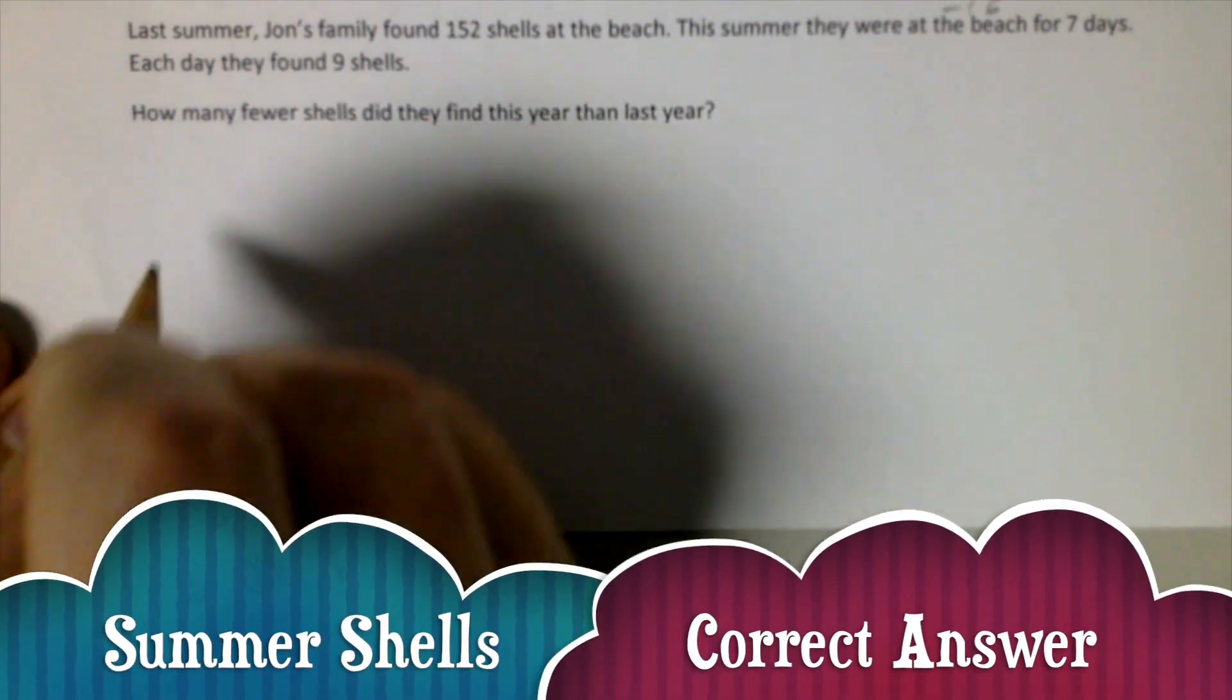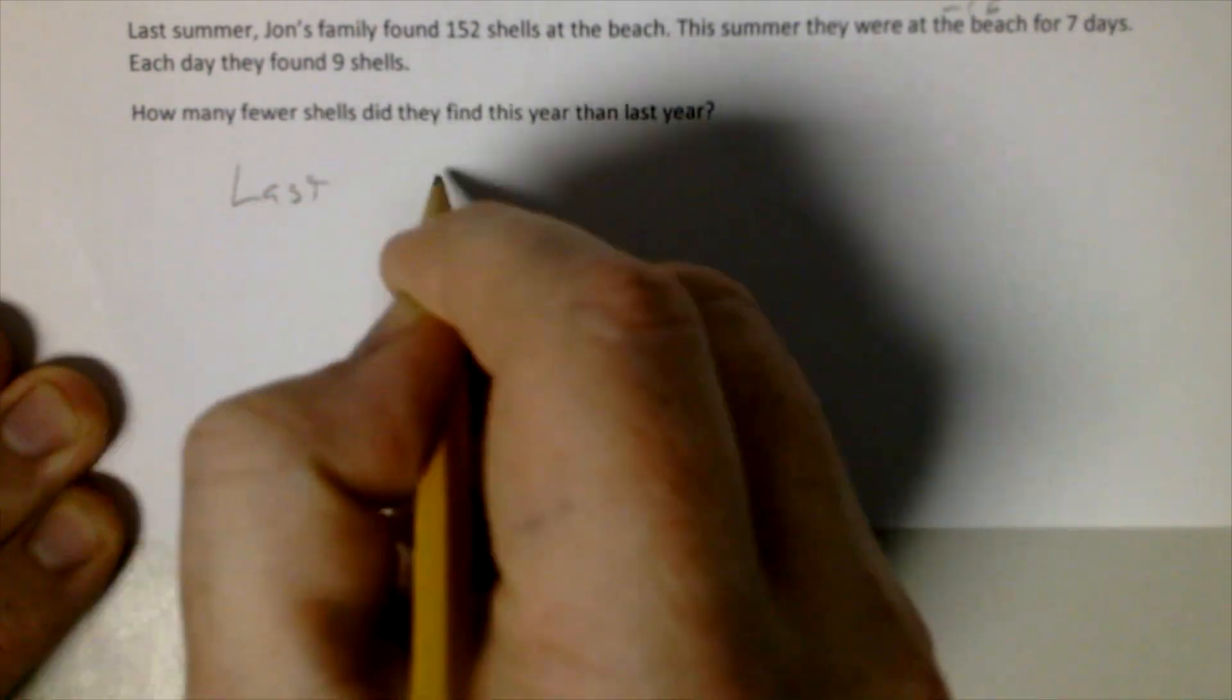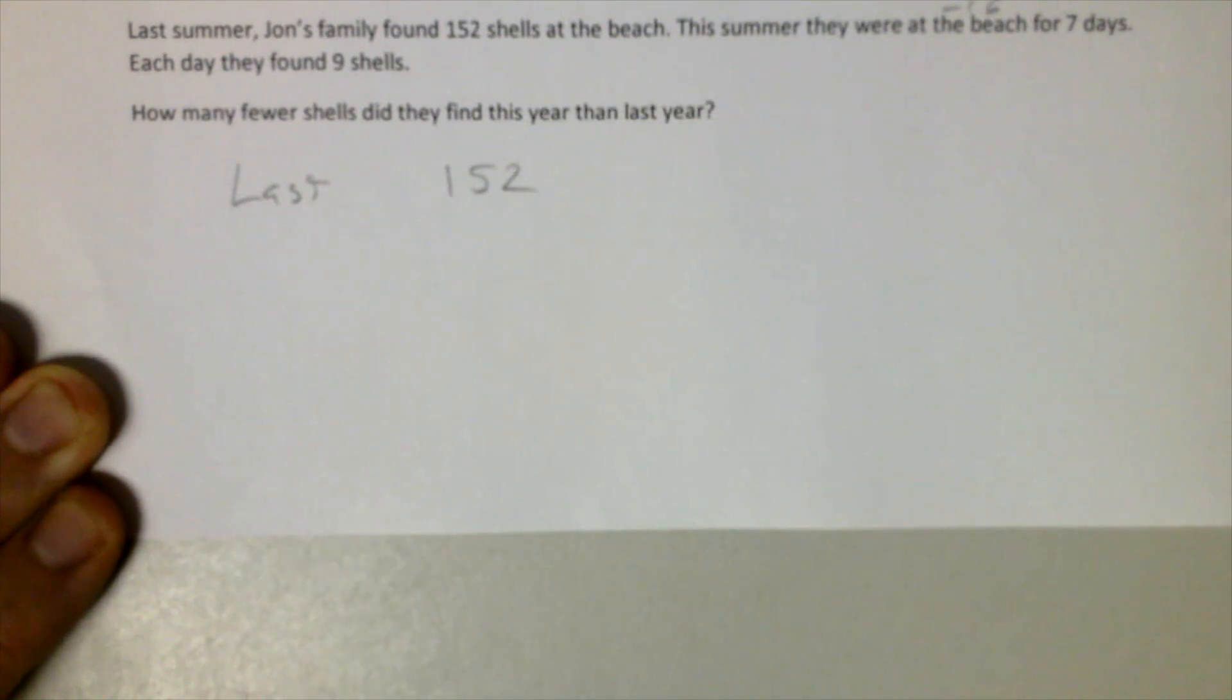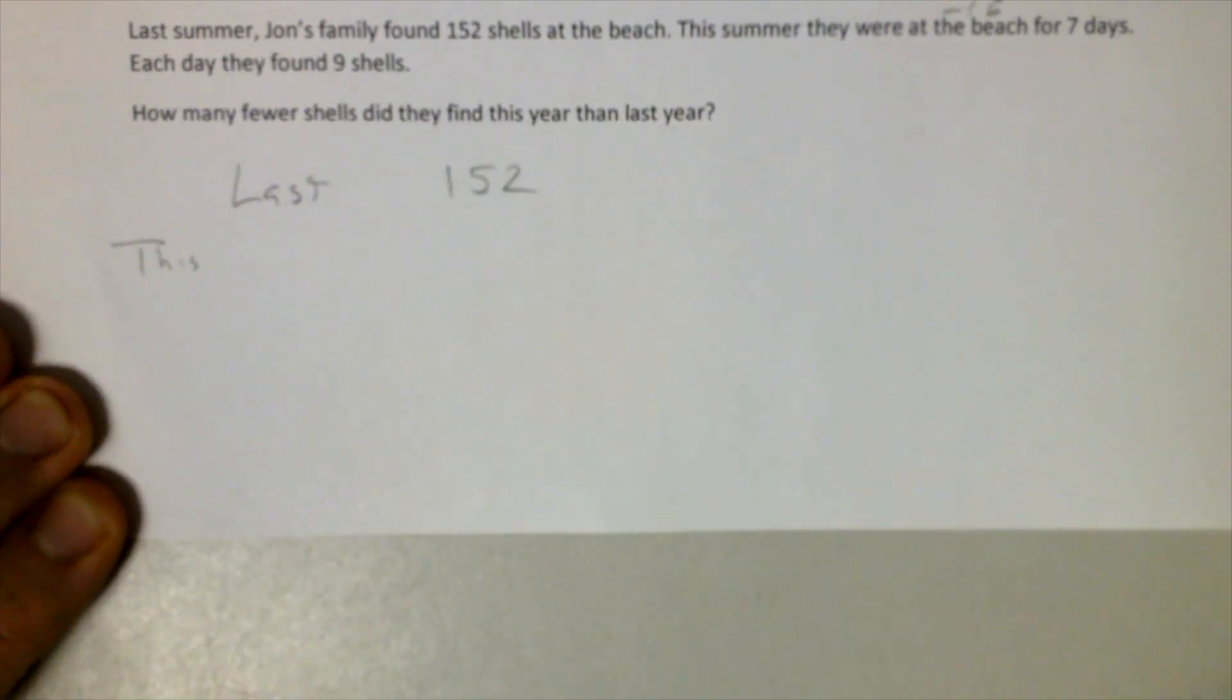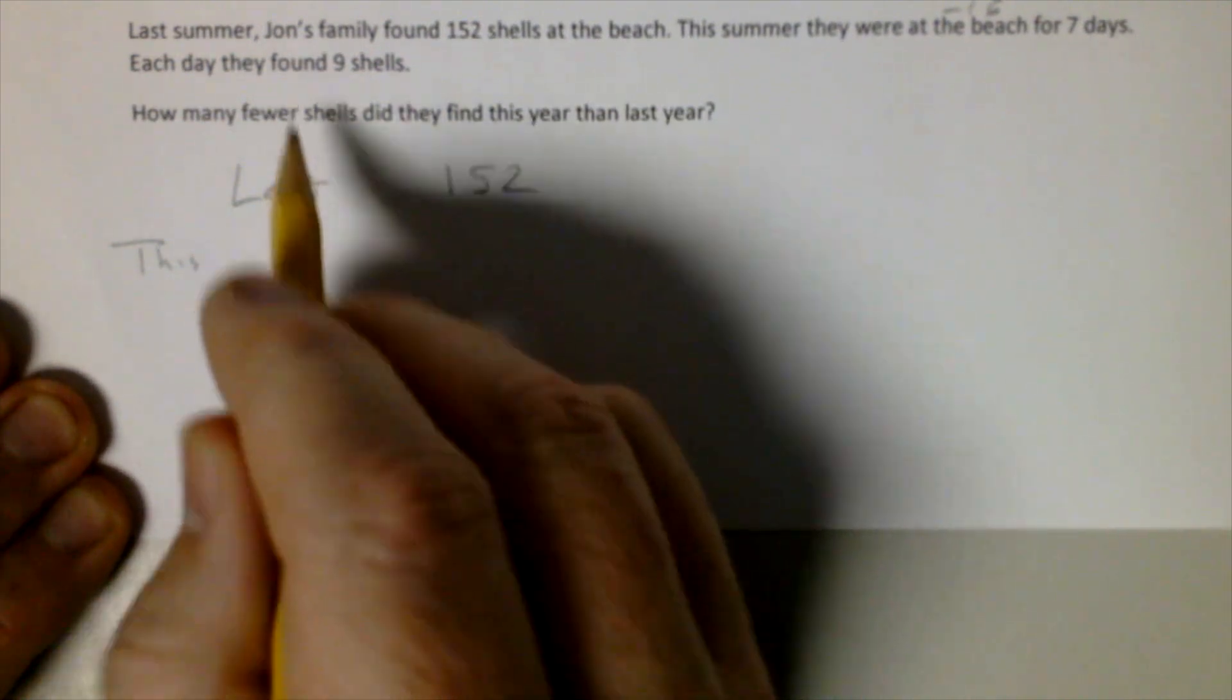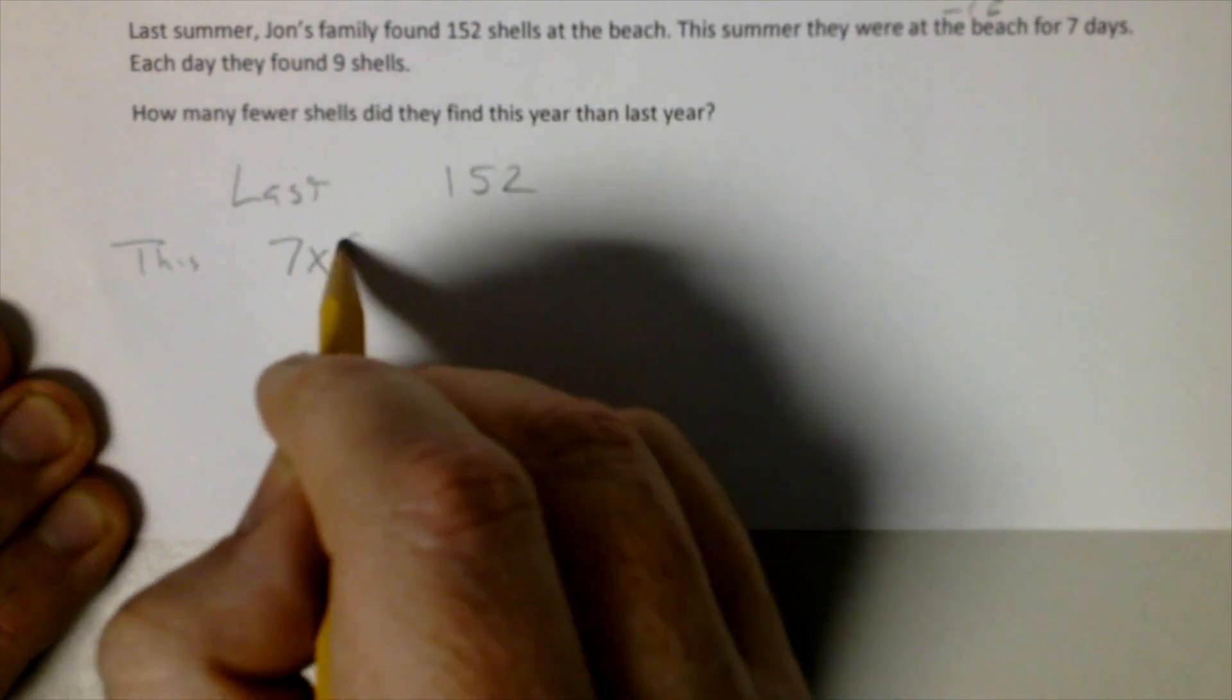Here we have two sets of data. We have last summer and that was just a raw number, 152. And then we have this summer, and that's where we went seven days and each day was nine shells.